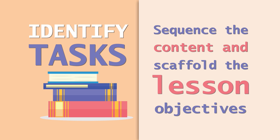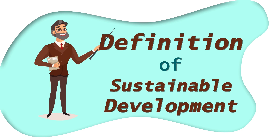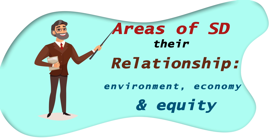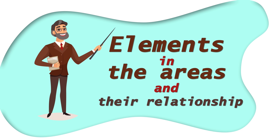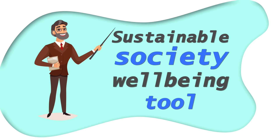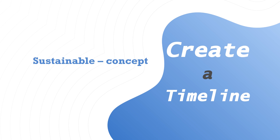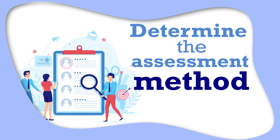While deciding the resources or selecting the content, the content will be selected on the basis of the goals: the concept of sustainability, the definition of sustainable development, the areas of sustainable development and their relationship — that is environment, economy, and equity — the further elements in these areas and their relationship, what is a sustainable society, how we can say a society is sustainable, and also deciding to use a well-being tool for sustainable society. This also involves creating a timeline for all these concepts, areas, and principles, and then deciding the assessment technique to be used.